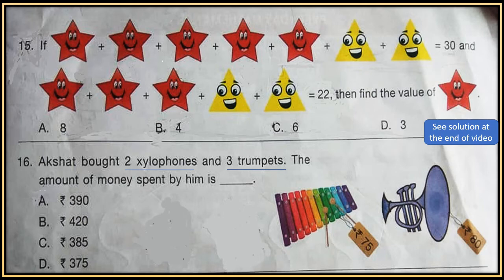Question 15: If 5 star plus 2 triangle equals 30, and 3 star plus 2 triangle equals 22, then find the value of star. Now in both the equations, number of triangles are equal. And since we have to find the value of star, we have to remove the triangles from the equation. So what we will do is we will subtract the two equations and we will get the value of star.